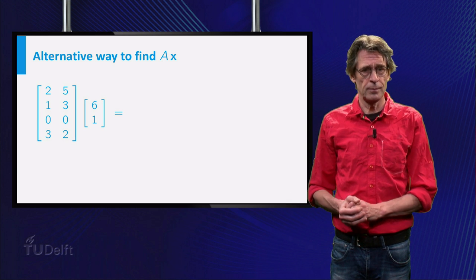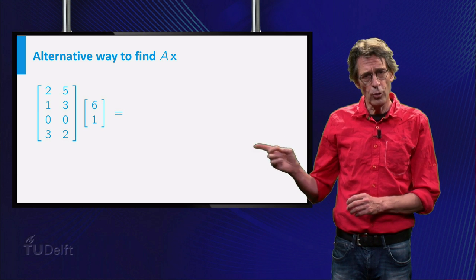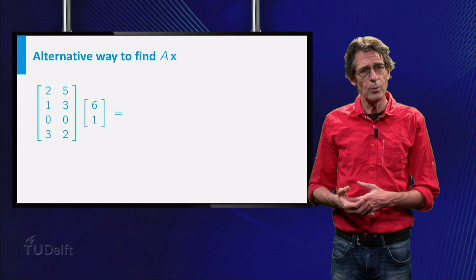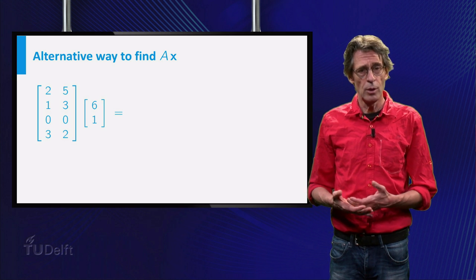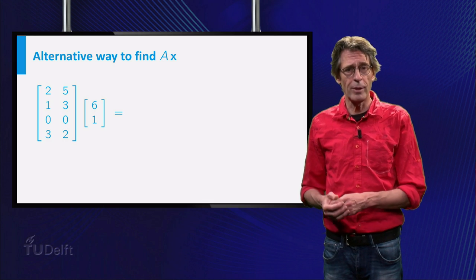This works in any dimension. In the small example on the slide, a 4 by 2 matrix is multiplied with a vector in R2. For instance, the fourth element is found using the fourth row of the matrix. This is the shortest route to find the product.